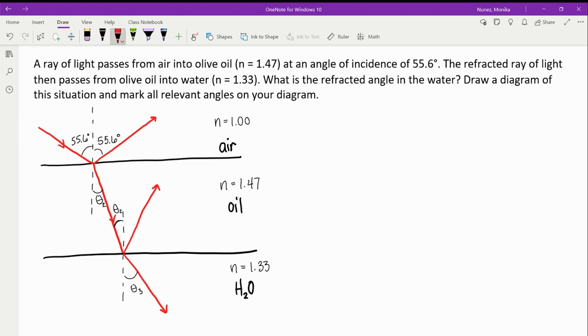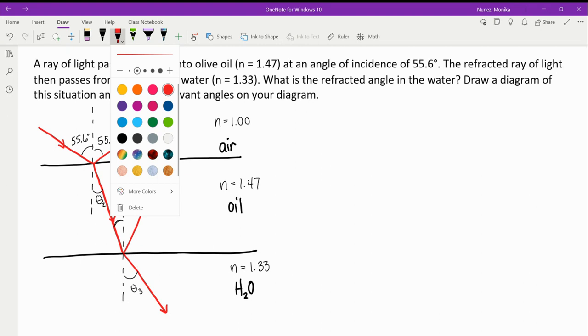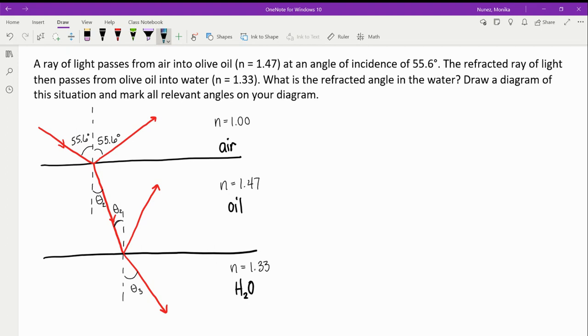So now that we've drawn a diagram showcasing the path that light will take, it's time to actually calculate angles. In each case, we'll be using Snell's law, or n1 sin θ1 = n2 sin θ2.